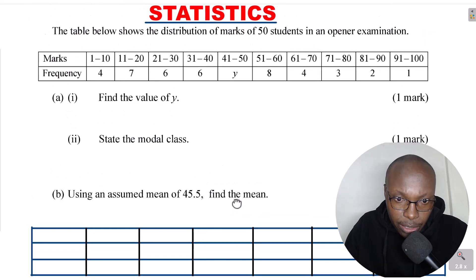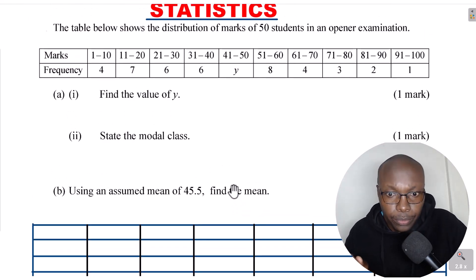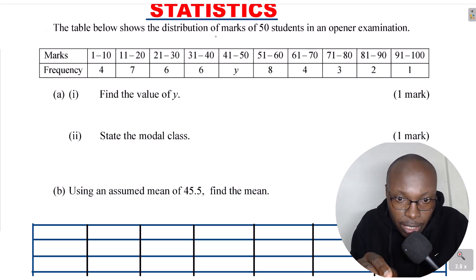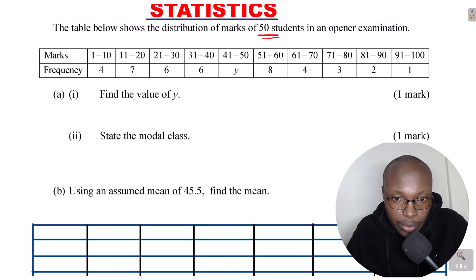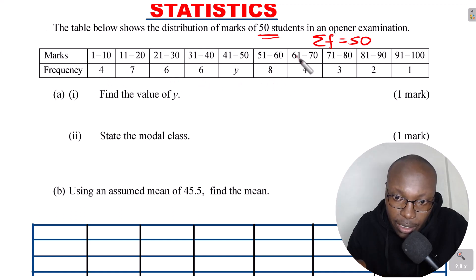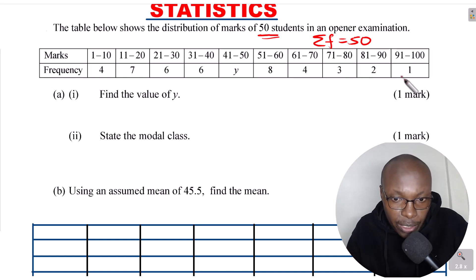Let's go to the first part where we're supposed to find the value of y. y is in the row where we have the frequency. We've been given that the distribution is for 50 students, so 50 refers to the total frequency. The summation of all frequencies is supposed to be 50.